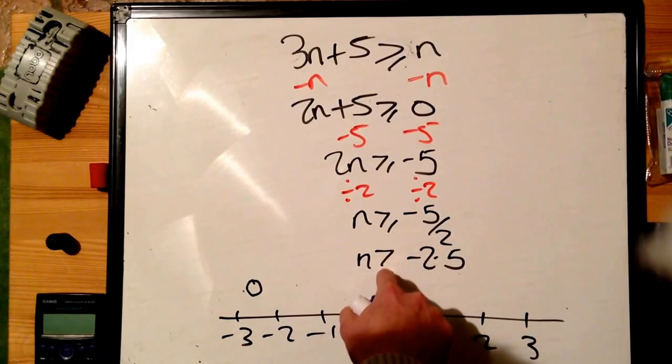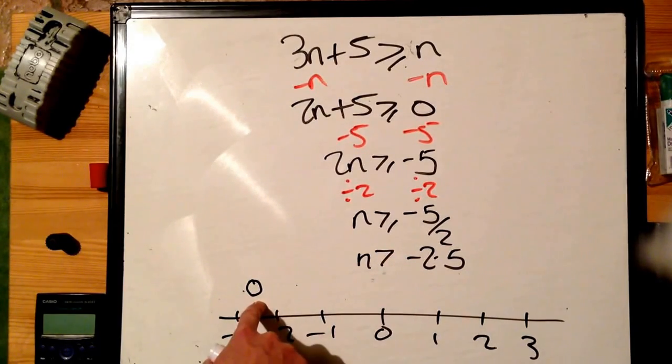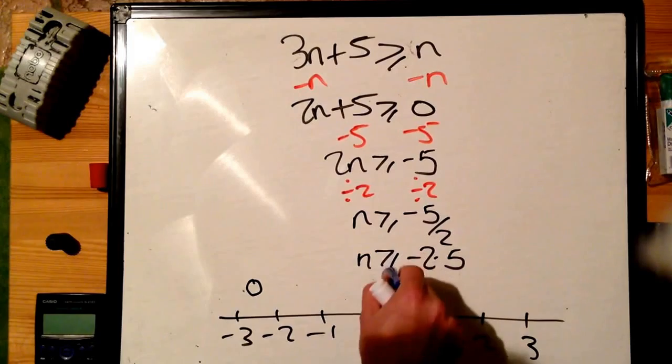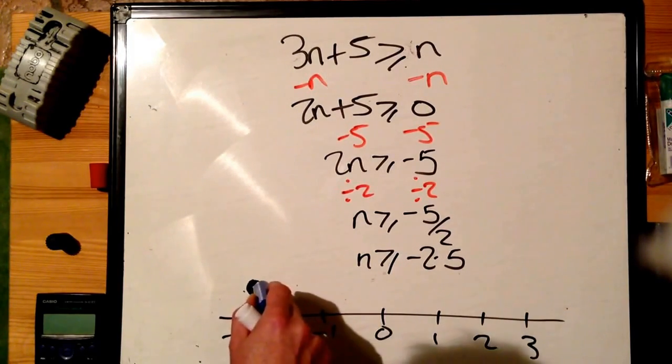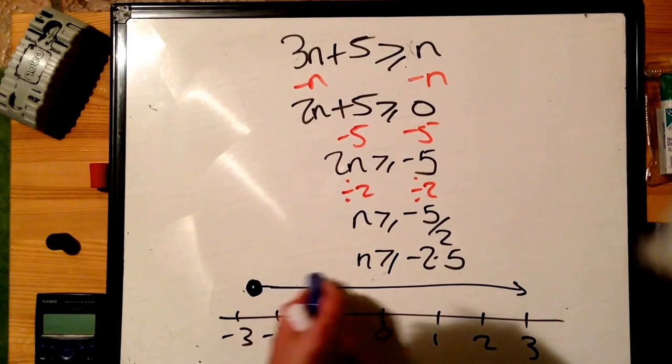Just bigger than minus 2.5, we leave the circle empty. Bigger than or equal to, fill it in. We want bigger than or equal to, so our line heads off in that direction.